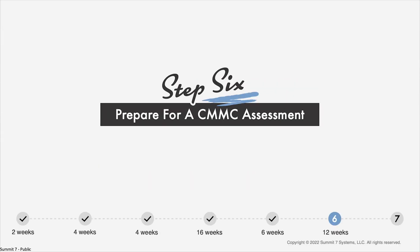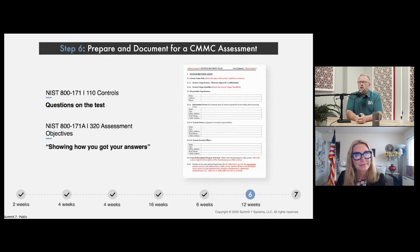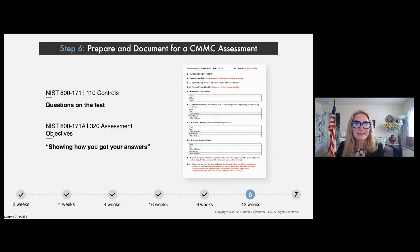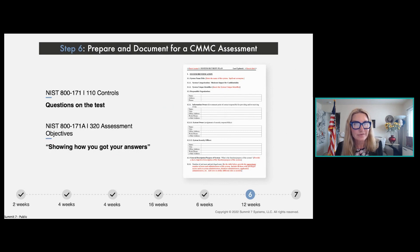The next step is to prepare for a CMMC assessment. We've covered step six with 12 weeks allocated for documentation. Hopefully you've been documenting all along as you've been going, improving your environment, identifying what assets you have, and classifying them in the right scoping areas. When we start, the most important document of all is the SSP.